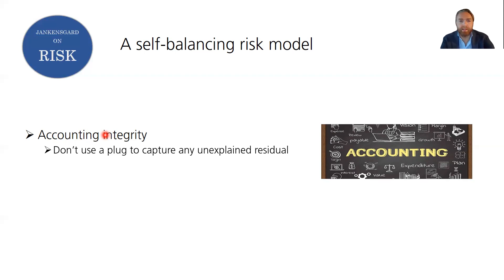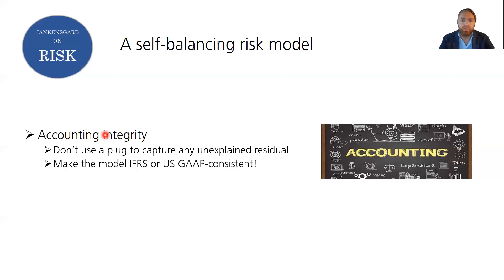In practical terms, this means we are not going to use a plug to capture any unexplained residual in the model. If you add lots of lines but don't set them up to hang together, there will be some residual and you'll be tempted to plug it — but that plug absorbs all inconsistencies and errors while making the model look balanced. Instead, we're going to make the model IFRS consistent, looking at how accounting works under IFRS standards and having the model reflect that. That's how we achieve accounting integrity.